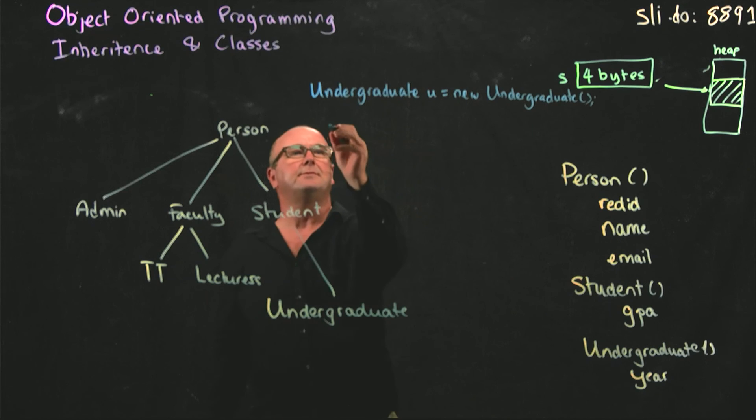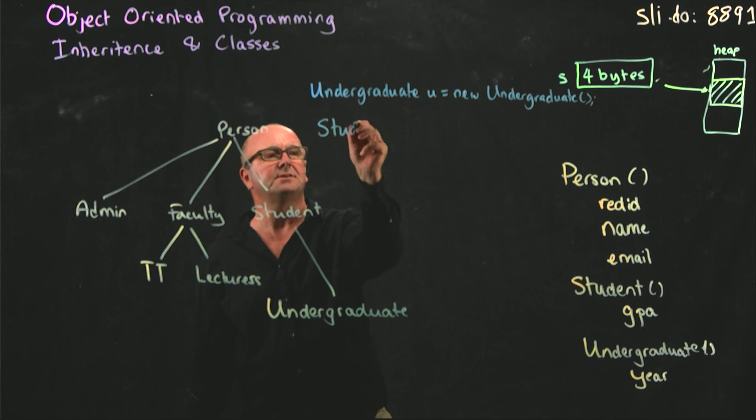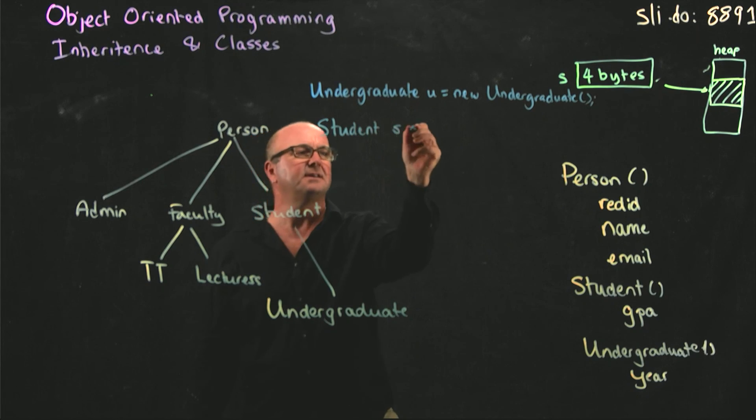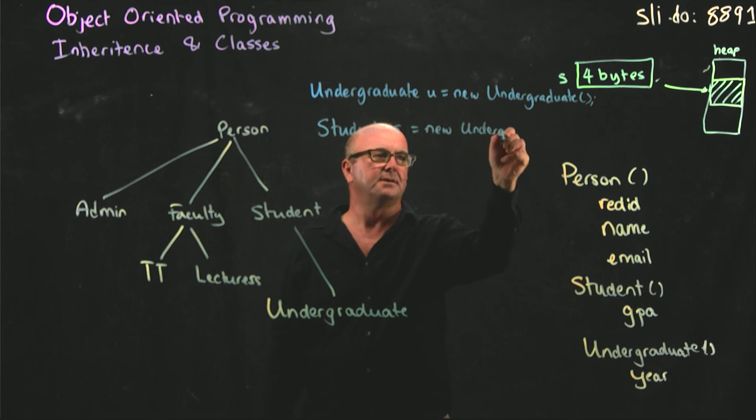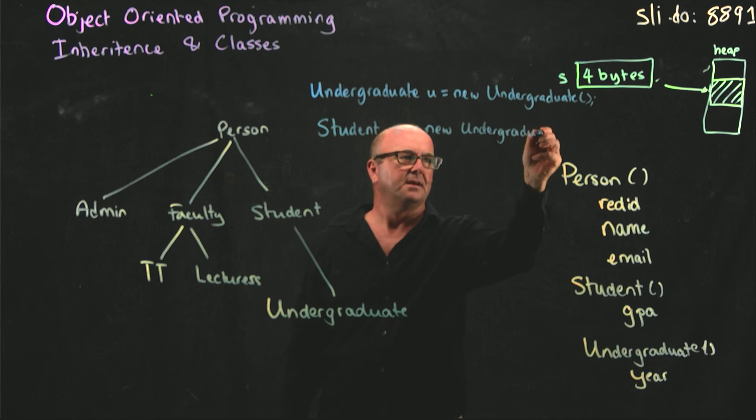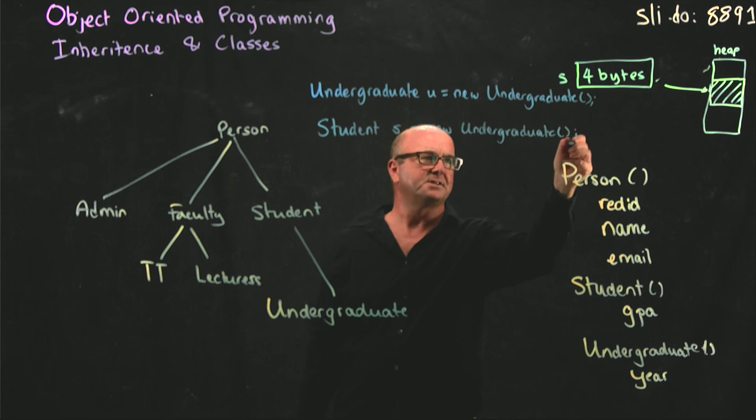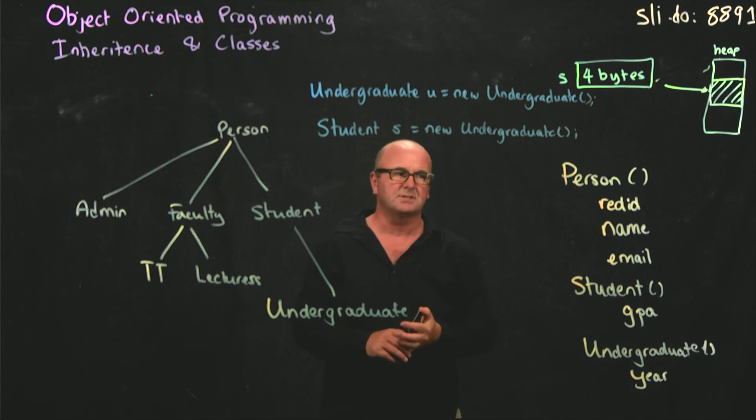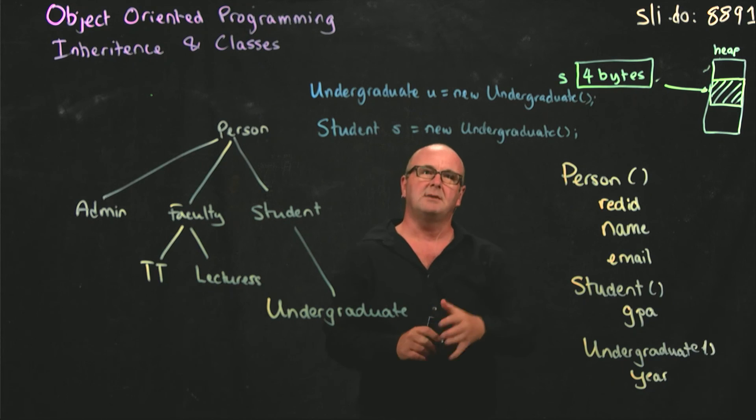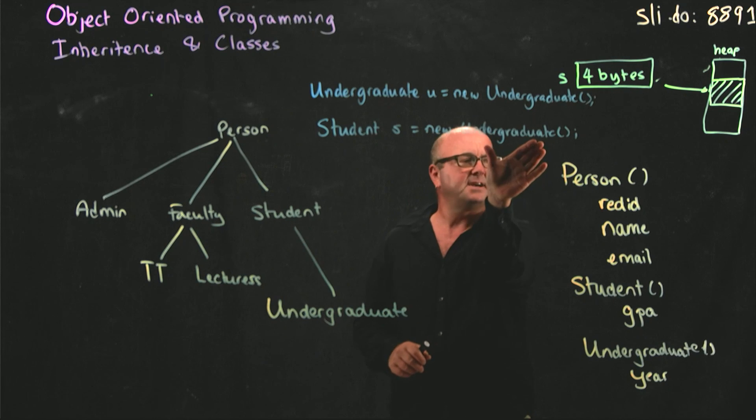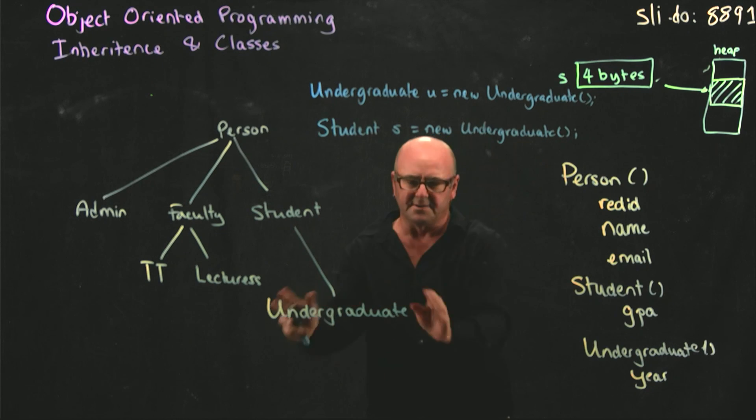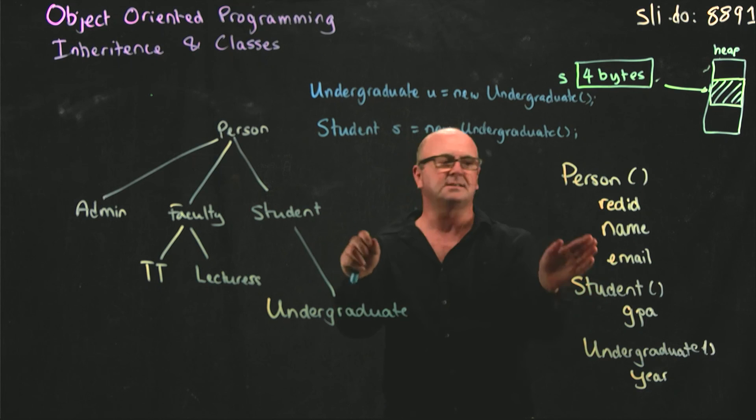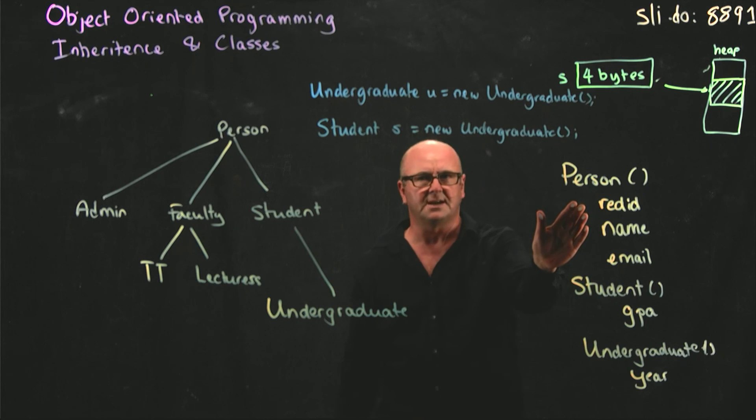You can, for example, say I have a student s which is a new undergraduate. There are very few occasions when you really want to do this, but it's possible to do it. Because what happens is we get space allocated for an undergraduate object, which has all of the things that undergraduate has, which has all of the things that student has, which has all of the things that person has.